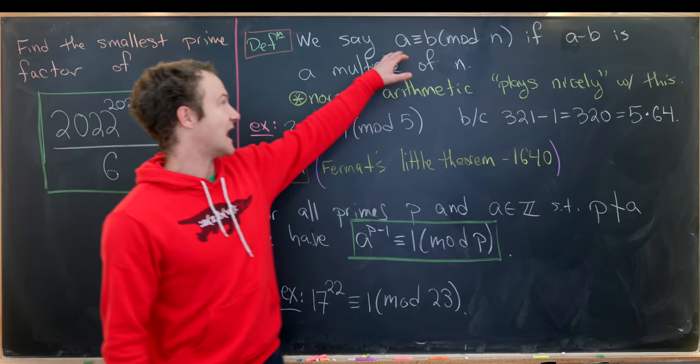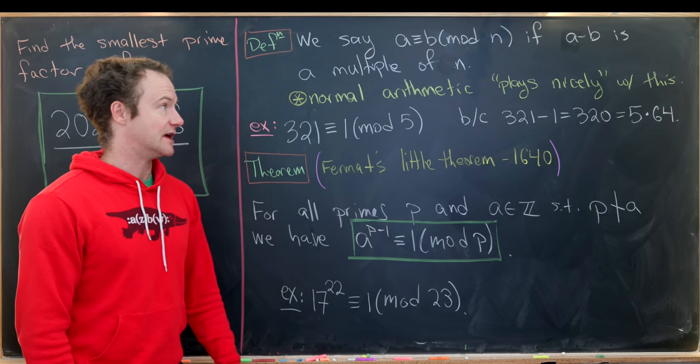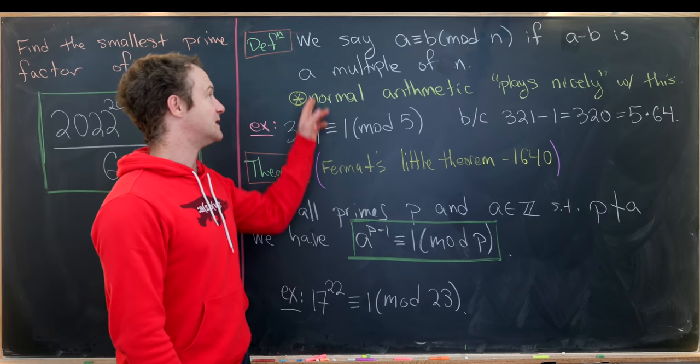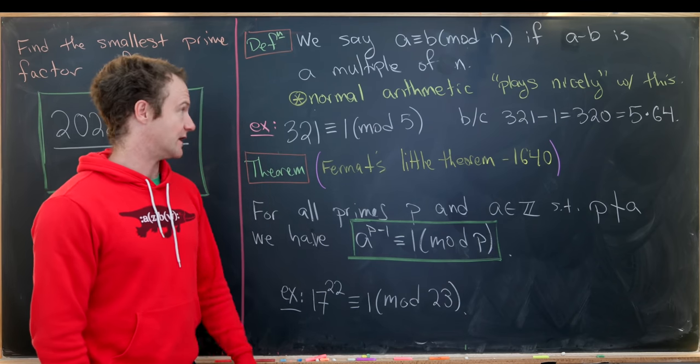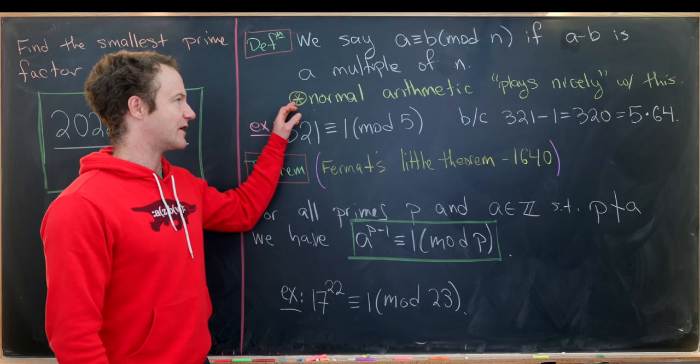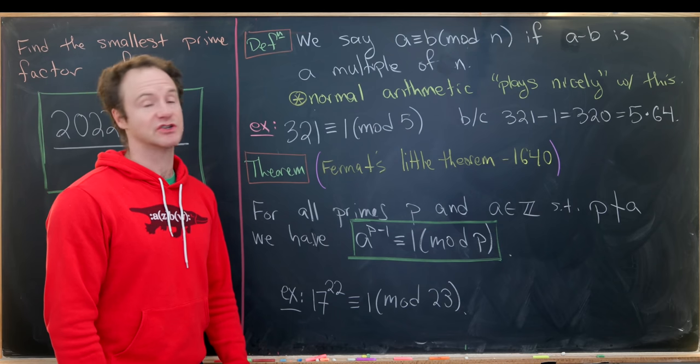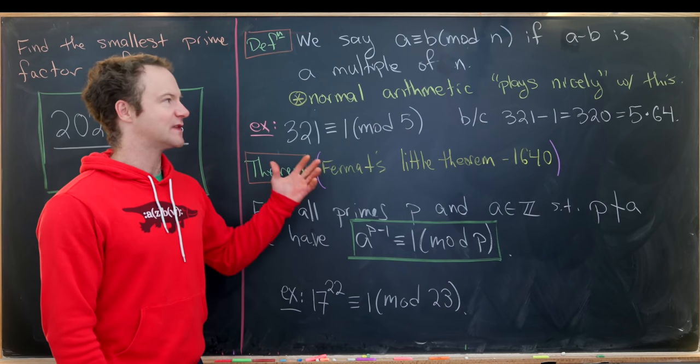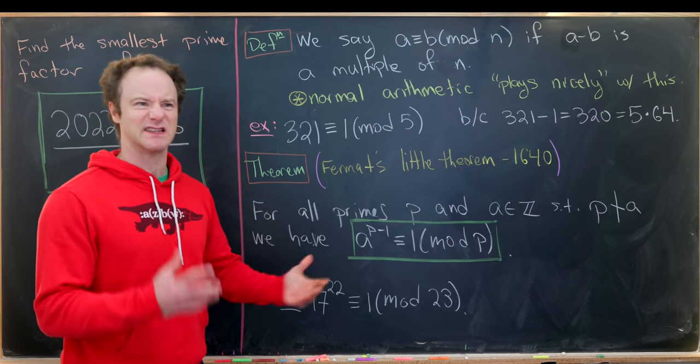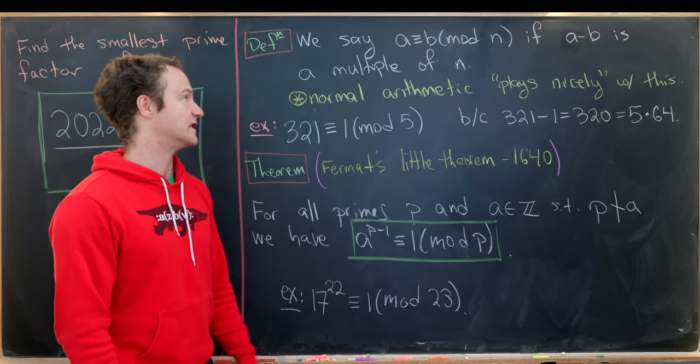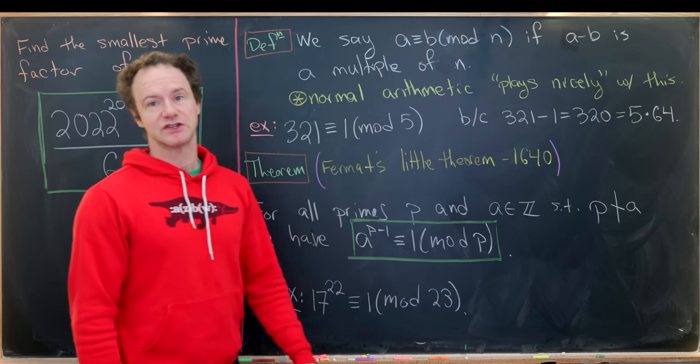So we say that a is congruent to b mod n if a minus b is a multiple of n. And I'd just like to point out here that normal arithmetic plays nicely with this concept of modulo n. So that's important, so it makes sense to do normal arithmetic in this setting.